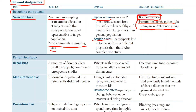In Berkson's bias, if you take people from a hospital as your sample, people in a hospital are generally not that healthy. The general population is a lot more healthy than people who go to the hospital. So if your sample is built only on people who go to the hospital, your sample is slightly biased.